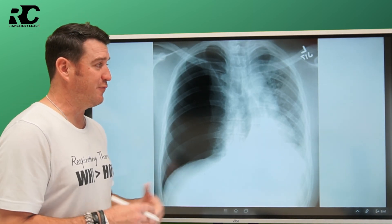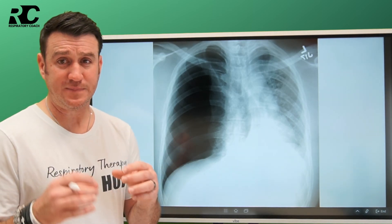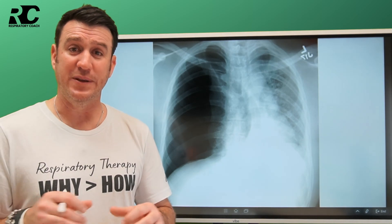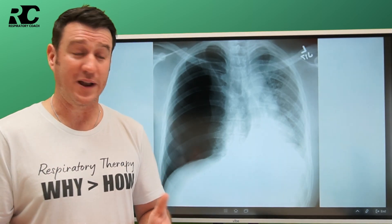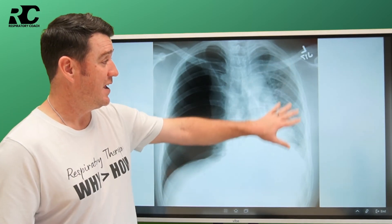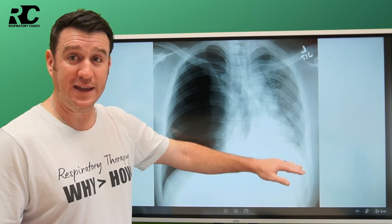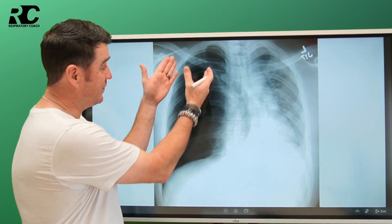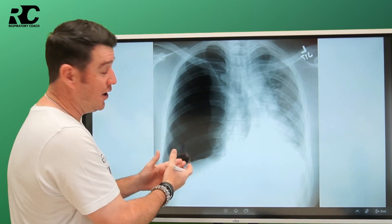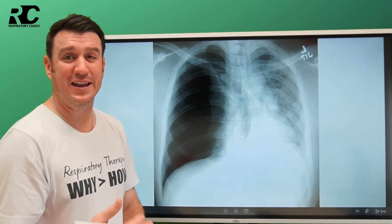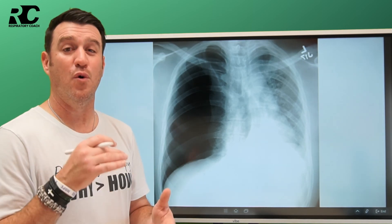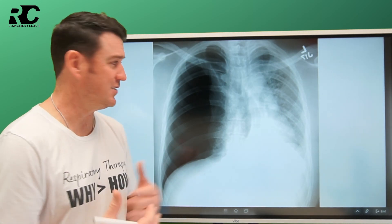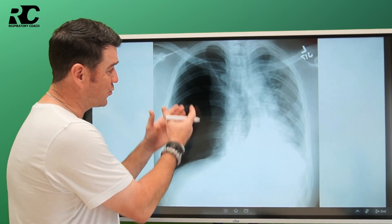When we look at this x-ray, the first thing I notice is that I can see two lung fields, but they don't look the same. On this side, I see more white, more haziness, more opaqueness. On the other side, I find more blackness, more hyperlucency. I noticed that right off the bat.